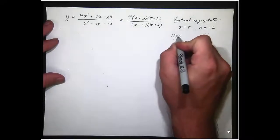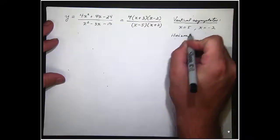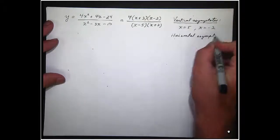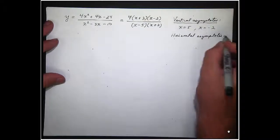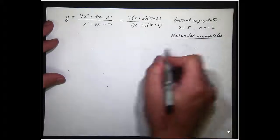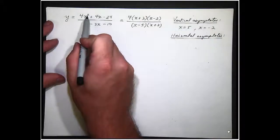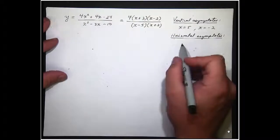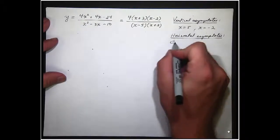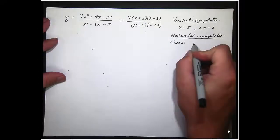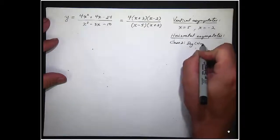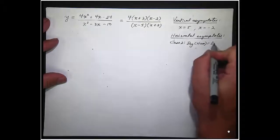With the horizontal asymptotes we always compare the degrees. So I'm going to look at the degree of the numerator and I'm going to look at the degree of the denominator and I'm going to compare them. Notice the degree is 2 and the degree is 2. So here we have, I call it case 2 because the degree of the numerator and the degree of the denominator are equal.